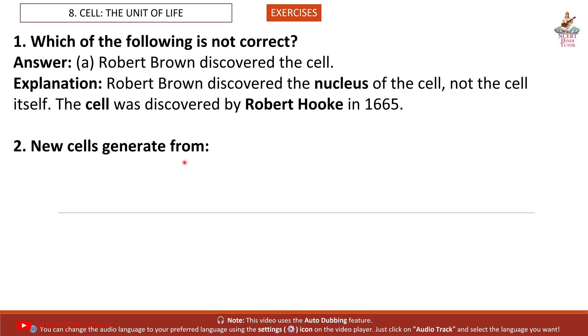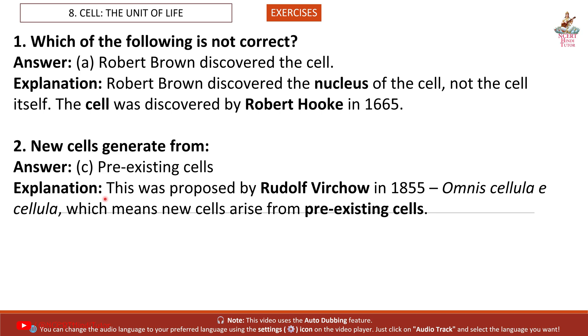Question 2: New cells generate from. Answer: C. Pre-existing cells. Explanation: This was proposed by Rudolf Virchow in 1855. Omnis cellula e cellula, which means new cells arise from pre-existing cells.